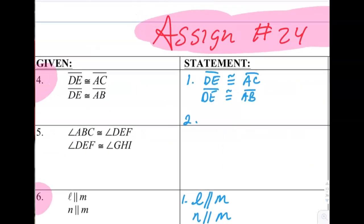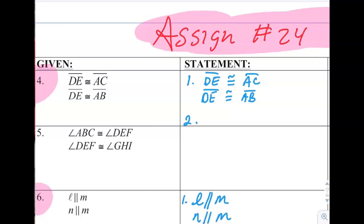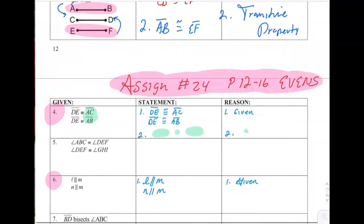So in this first one, if DE is the same as AC and DE is also the same as AB, then these two have to be the same. So I would say AC is congruent to AB because of the transitive property.